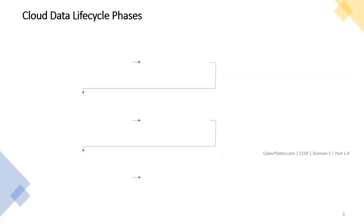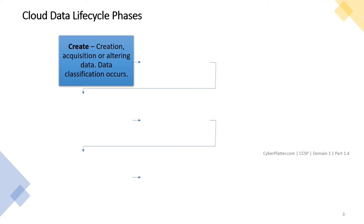The first topic is cloud data lifecycle phases. This is not truly a cycle because data does not continue after the destroy phase, which is the last phase. Not all data goes through all six phases — for example, not all data is archived or even destroyed. At all times, it is important to be aware of the logical and physical location of the data to satisfy audit, compliance and other control requirements, as well as who is accessing the data and how.